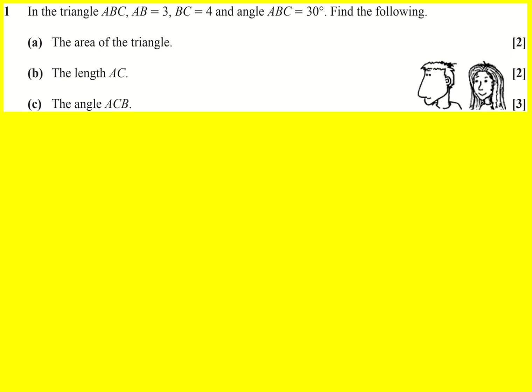In this question we've got a triangle and we're being asked some questions about it. So the first thing to do is just get a little sketch down of this triangle. A, B, C. Now we're told that AB is 3, BC is 4, and this angle ABC, that's the angle between the lines AB and BC, is 30 degrees.